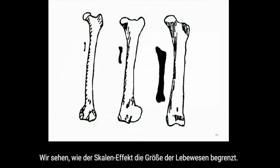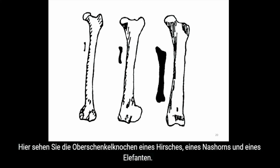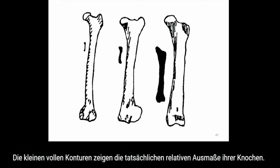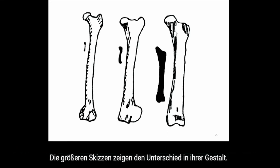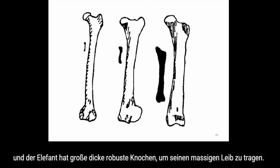We can see scale effects limiting the size of real life. The legs of large-scale animals generally tend to be proportionally thicker for greater strength. Here is the thigh bone of a deer, a rhinoceros, and an elephant. The small solid shapes indicate the true relative size of these bones, and the larger outline indicates the difference in their shape. The deer has the most slender legs, the rhinoceros relatively thicker, and the elephant has great thick sturdy bones to support its massive bulk.